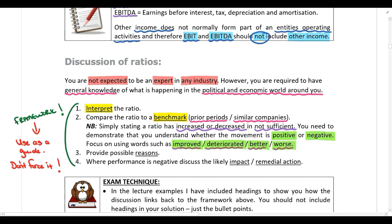After comparing to a benchmark, you are going to provide possible reasons. Please only provide a possible reason if there is a good reason for the movement. You are using this framework as a guide — don't force it. If you can't come up with a good reason, then don't write anything down. Only provide a reason if there is a genuinely good reason for the movement.